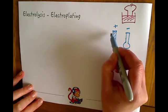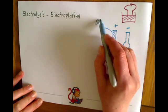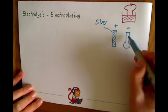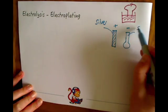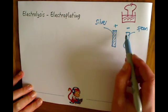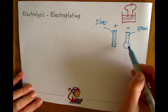So for example we could suggest that this was silver and this is the spoon that we want to plate to make it a silver plated spoon and we'd use these as our electrodes.